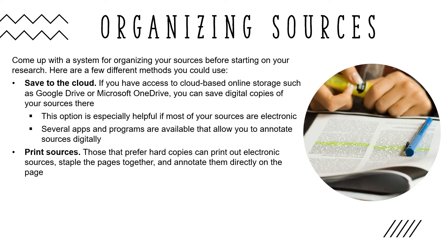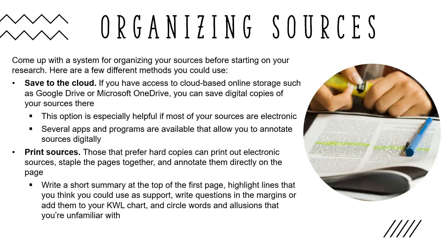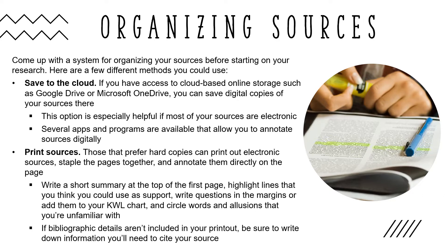Those who prefer hard copies can print out electronic sources, staple the pages together, and annotate them directly on the page. Write a short summary at the top of the first page, highlight lines that you think you could use as support in your essay, write questions in the margins or add them to your KWL chart, and circle words and allusions that you're unfamiliar with. If the bibliographic details of a source aren't included in your printout, be sure to write down the information you'll need to cite your sources later on.